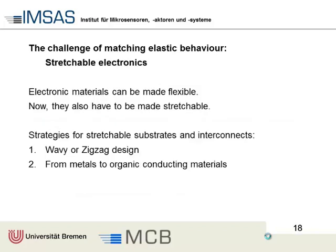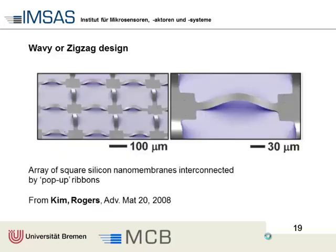The next issue is elastic matching - the elastic behavior. If the material is bendable, the sensor has to be bendable too. If the material is stretchable, the sensor has to be stretchable too. Many people are thinking about how to make sensor structures bendable and stretchable. Essentially there are two approaches: make it with a wavy or zigzag design, or use materials which are more stretchable in themselves - going from metals to organic conducting materials. A very famous example is Kim and Rogers for the use of a wavy design, which provides a lot of reserve of stretchability.